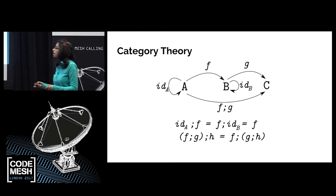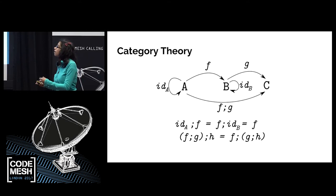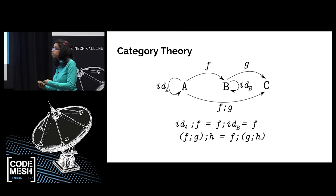We can use category theory to model function composition in programming. The way we do that is we say: our objects in category theory — A, B, and C — are types, and these arrows are functions. So we can use this to represent what we do when we code.